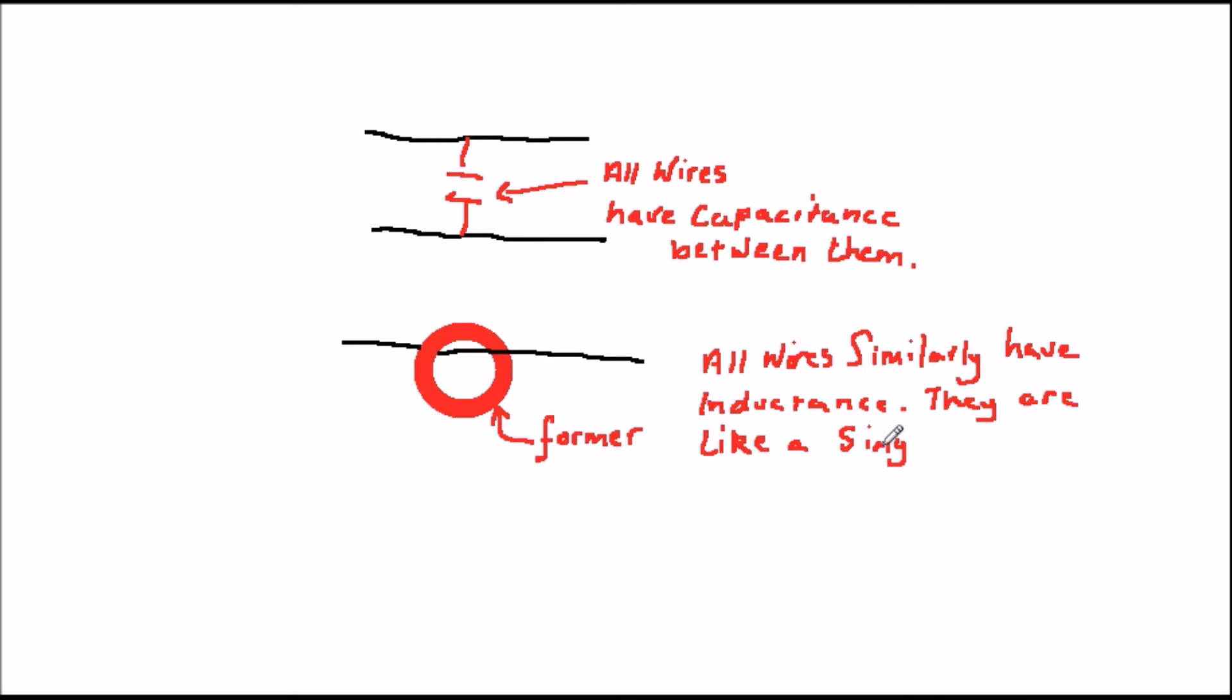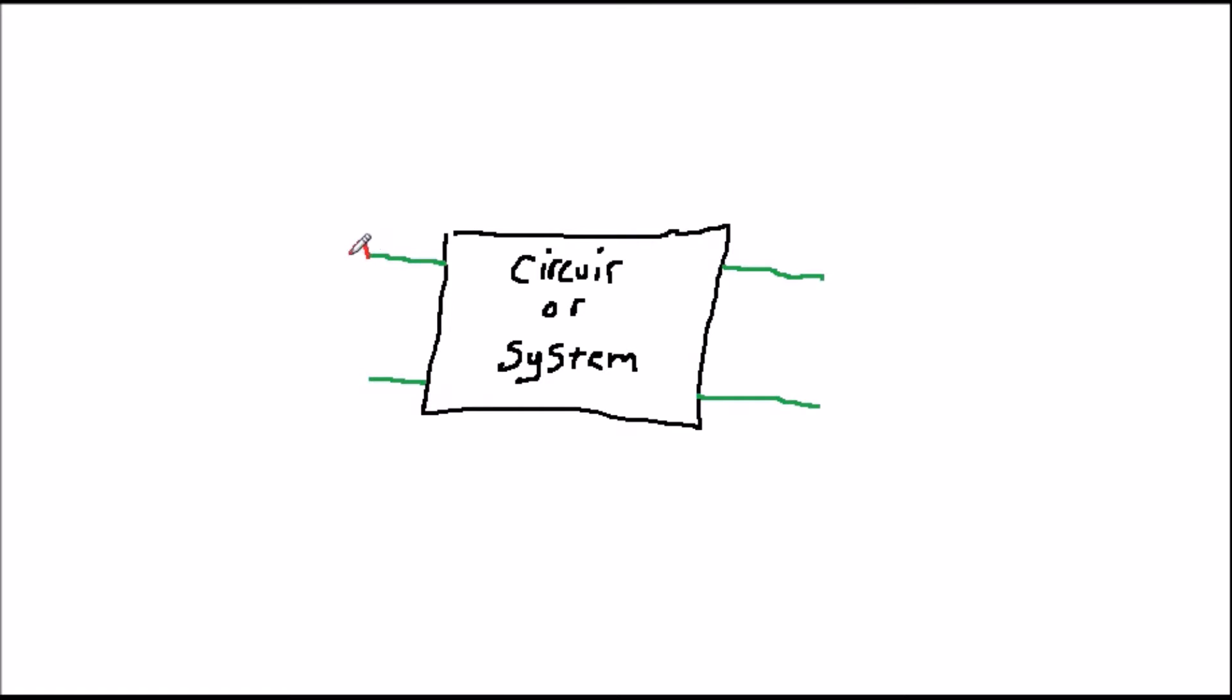These components, which are part of the very fabric of our wires and conductors, are called distributed components. Because the values of these components are generally very small, they usually only affect the circuit at high frequencies. However, at such high frequencies, they can be a problem and are called parasitic components.